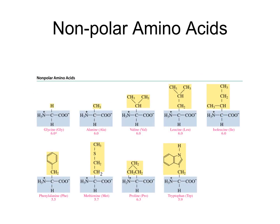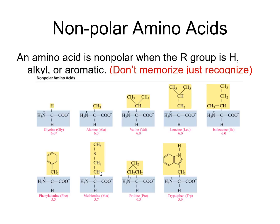Out of the 20 amino acids, these are the ones considered non-polar. Notice that except for methionine and tryptophan, all of the side chains contain only carbon and hydrogen. Phenylalanine has a benzene ring, which is also carbon-hydrogen. Methionine has a sulfur but is still considered non-polar. Tryptophan has a nitrogen but is also considered non-polar. You don't need to memorize names or structures, but if shown a picture with a side chain of carbons and hydrogens, you should be able to identify it as a non-polar amino acid.